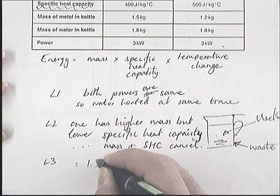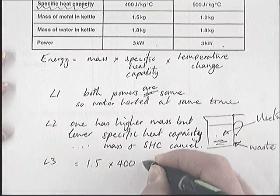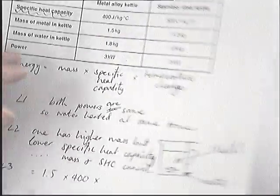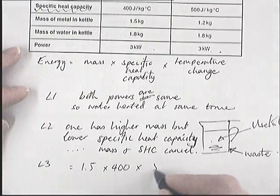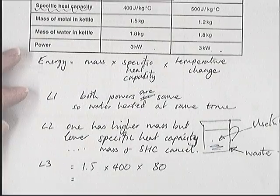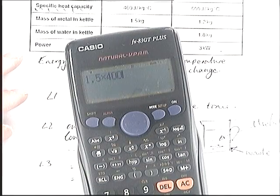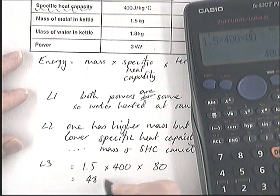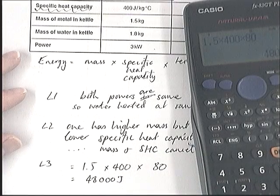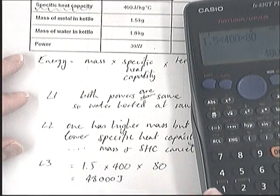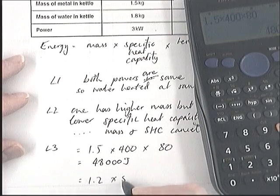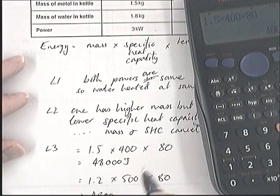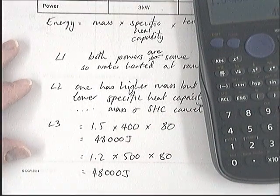It starts at 20 degrees, so the temperature change is 80. That gives 48,000 joules. And if you work through the other one, you find that 1.2 times 500 times 80 — the temperature change is the same — is also 48,000 joules. So no wonder they both heat up at the same time.